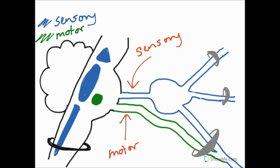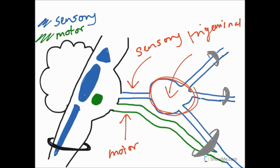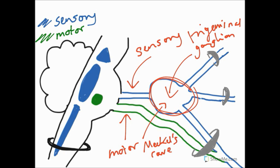Continuing on from the sensory root, we have this structure here — this is our trigeminal ganglion. This is quite easy to see in dissections because it's rather large. This trigeminal ganglion is bound by two layers of dura, and this is called Meckel's cave, which is in the middle cranial fossa.